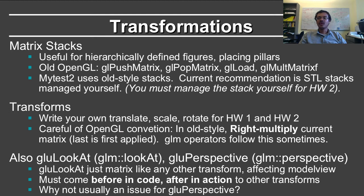To do all of these transforms, you need some kind of matrix operations. In particular, you need matrix stacks. This is very important for hierarchically defined figures, such as the human body. You might consider the face, the torso. You might define the torso initially, then translate and scale to place the face, the hands, the legs, and so forth.